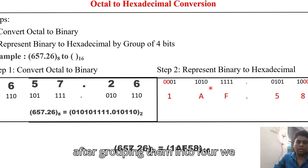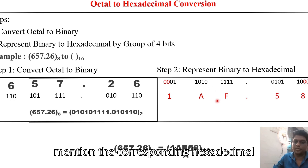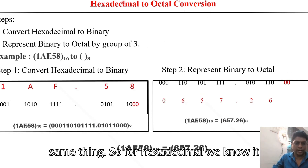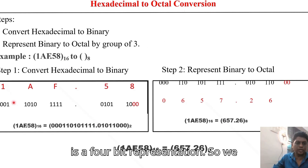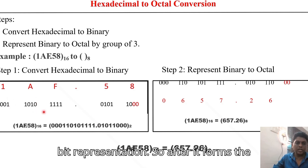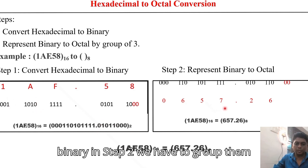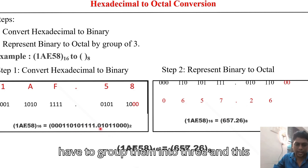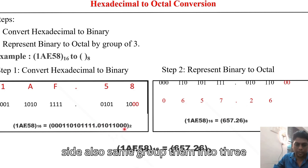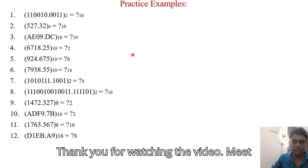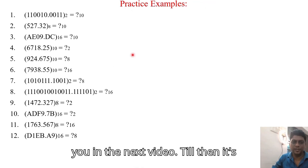For hexadecimal to octal conversion, first convert each hexadecimal digit into its 4-bit binary equivalent to form the full binary number. Then regroup those bits into groups of 3, starting from the LSB for the integer part and from the point for the fractional part. The result gives the octal representation, for example 7.26.